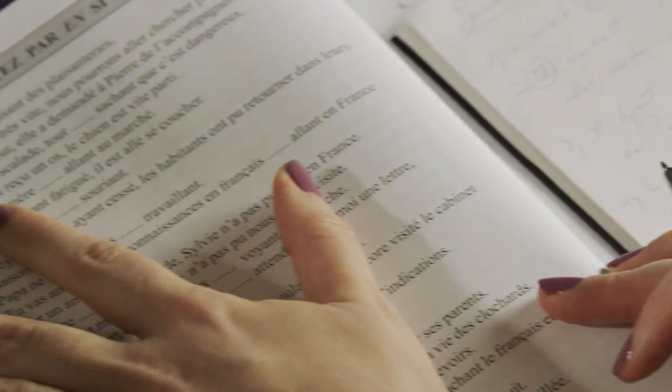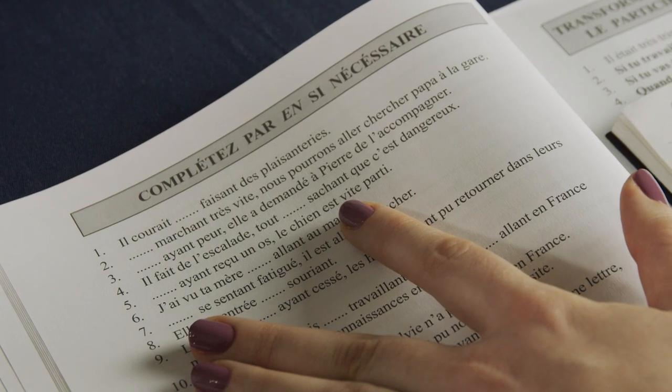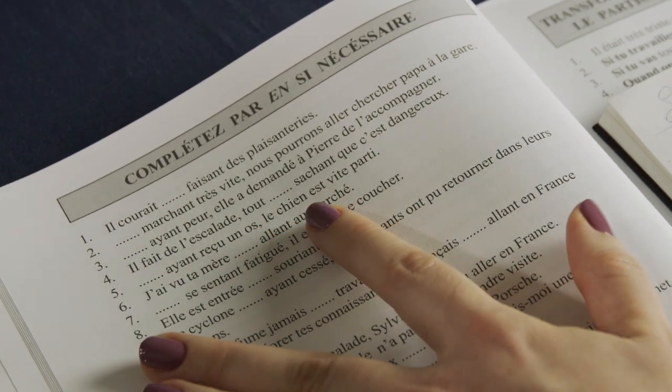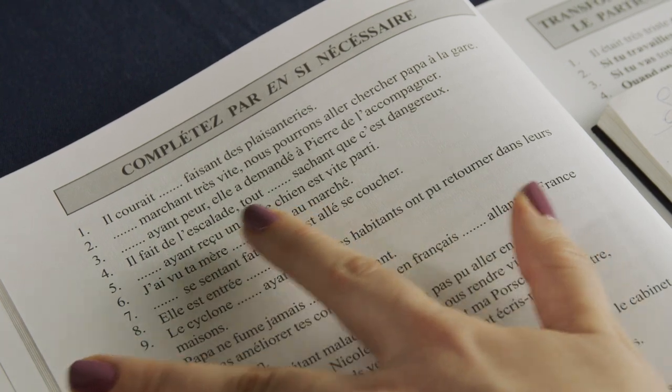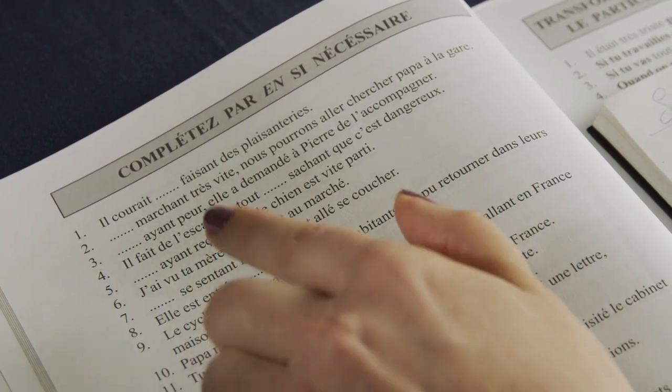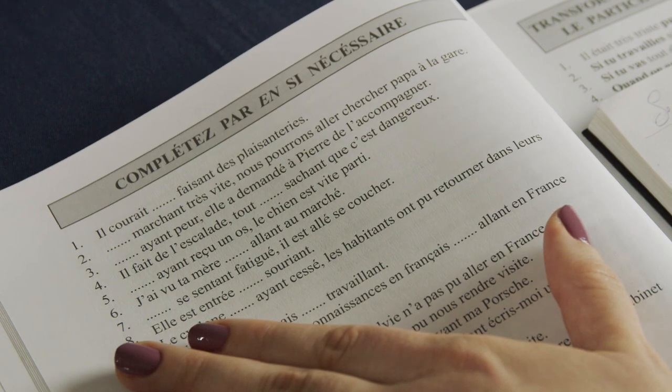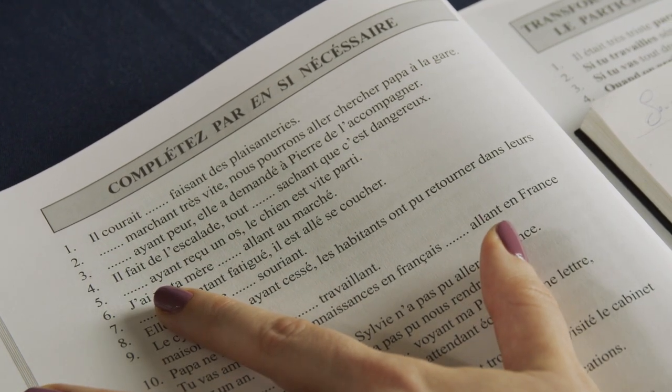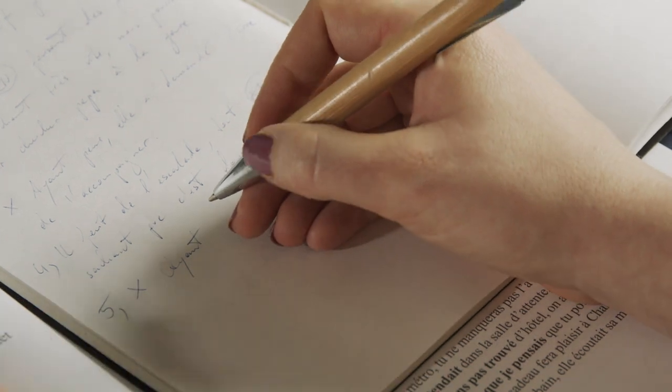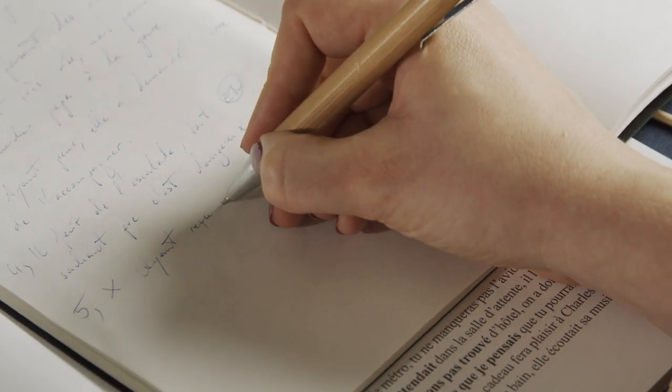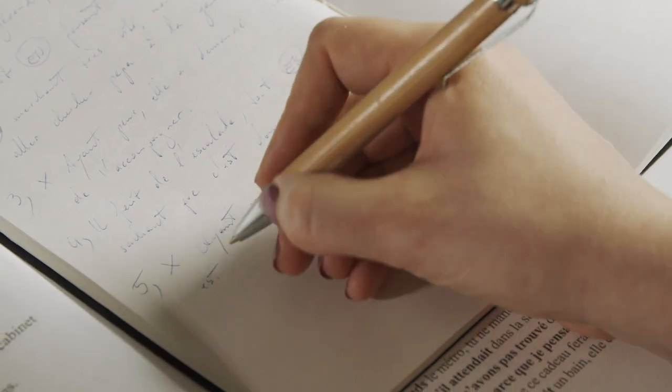Number five: Ayant reçu un os, le chien est vite parti. So having received a bone, the dog quickly left. Now this is both the same subject, the dog, but one thing happened before the other. So here's a sequence of events, we can't use the gérondif. And we leave the sentence as it is: Ayant reçu un os, le chien est vite parti.